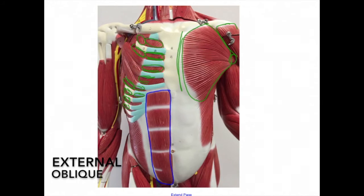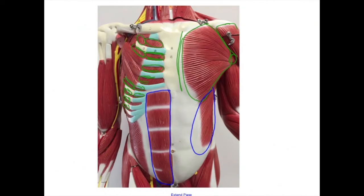Here we see the external oblique. The origin is the lower eight ribs. The insertion is the linea alba. The action is to compress the abdominal viscera and flex the vertebral column.